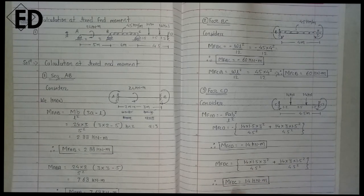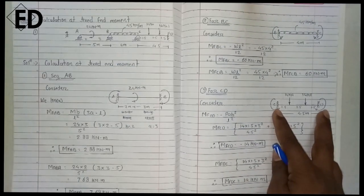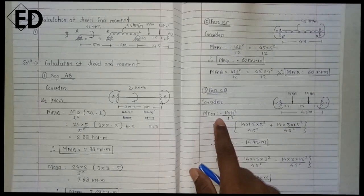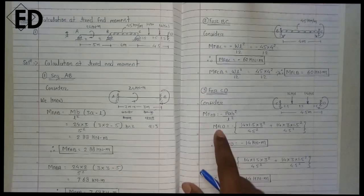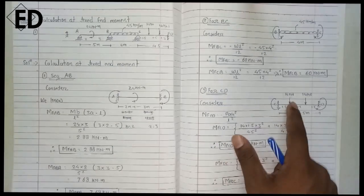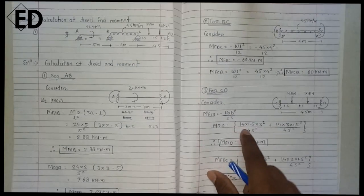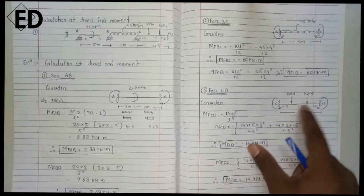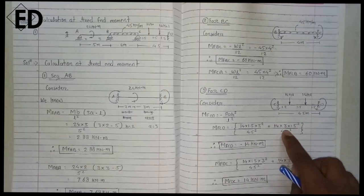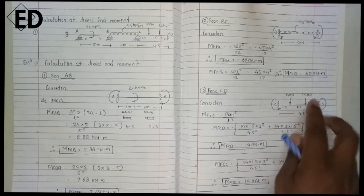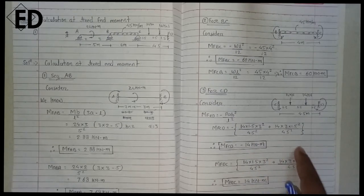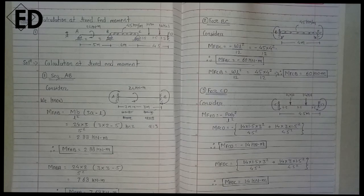This is the fixed end moment from C to B. Now moving towards the third and last span CD. Consider the ends are fixed. For a point load not at the center, the formula is minus P times A times B squared divided by L squared. There are two loads acting, so we use two terms. For the first load: P times A times B squared divided by L squared, where total L is 4.5, A for this load is 3, and B is 1.5. Negative sign is taken because the moment created at C is in the anti-clockwise direction.